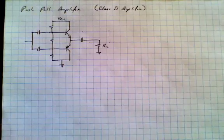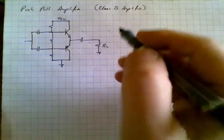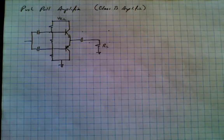The push-pull or class B amplifier is widely used as output drivers, for example, in audio speaker systems where RL may in fact be a speaker.